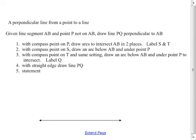Now we can draw a perpendicular line from a point to a line. In other words, we're given line segment AB, so let's label that line segment AB. And point P, not on AB. Draw line PQ perpendicular to AB.